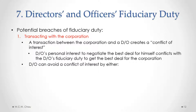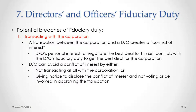A director or officer can avoid a conflict of interest when entering into a transaction with the corporation by either avoiding the transaction altogether, or by giving full notice and disclosure of the conflict of interest to the corporation and to the board, and then excusing themselves from voting on or being involved in reviewing or approving that transaction. By doing that, they avoid the conflict of interest.